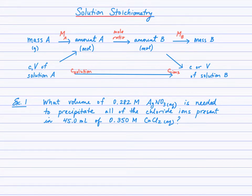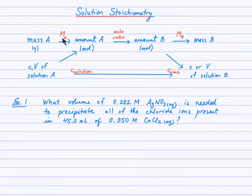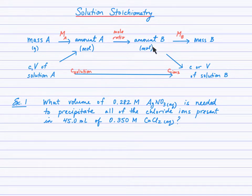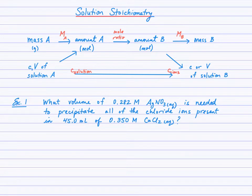This lesson is solution stoichiometry — stoichiometric problem solving involving solutions. You'll notice the familiar mole train here, where we have the mass of a substance given in grams, and we use the molar mass to convert to moles. A balanced equation is required to obtain the mole ratio, which we then convert to moles of another substance. Finally, use the molar mass of that second substance to find its mass. We're typically following a mass to moles to moles to mass pattern.